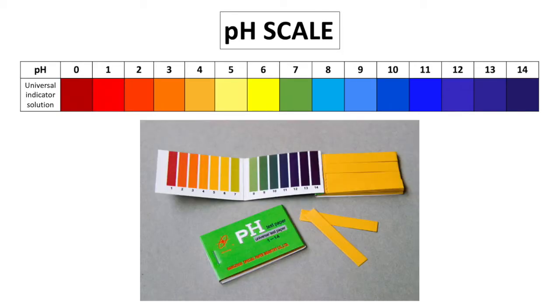We can use Universal Indicator paper which is just paper soaked in Universal Indicator solution. When this Universal Indicator paper is dipped into the substance, the colour change tells us if a substance is acidic, alkaline, or neutral.